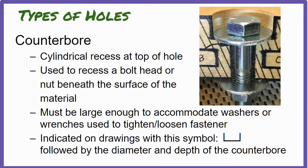A similar hole feature is a counterbore, but in this case the opening at the top of the hole is cylinder-shaped. For fasteners that don't have a cone-shaped head, such as nuts and bolts, a counterbore is used to recess the head of the fastener below the surface. The counterbore must be large enough to accommodate washers or wrenches used to tighten or loosen the bolt. Counterbores are indicated on a drawing using the counterbore symbol, which looks like an open upwards facing bracket, followed by the diameter and depth of the counterbore.